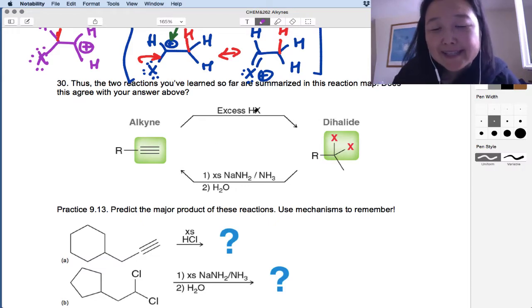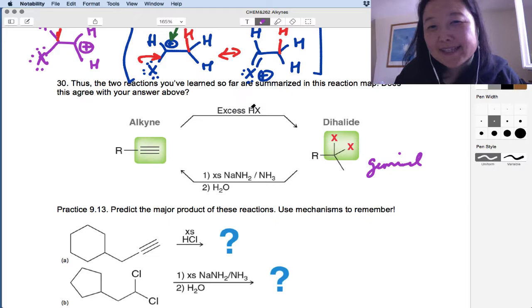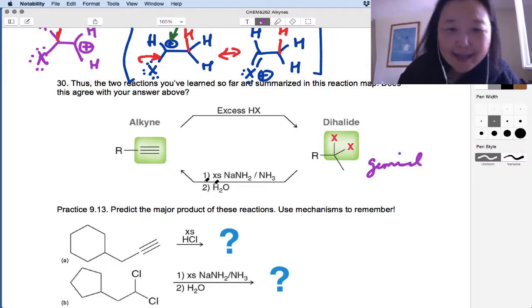So we've got two main reactions for alkyne so far. We've got our alkyne adding excess HX to make a geminal dihalide. And then we also have a way to turn this geminal dihalide back into an alkyne with the very first reaction we did earlier in this chapter, which was double elimination using a very strong base, sodium amide, in ammonia, followed by water workup to neutralize this terminal alkyne. And notice that with excess HX, you make the geminal, not the vicinal. But you can take a geminal or a vicinal dihalide and turn it into an alkyne. So just keep that in mind.